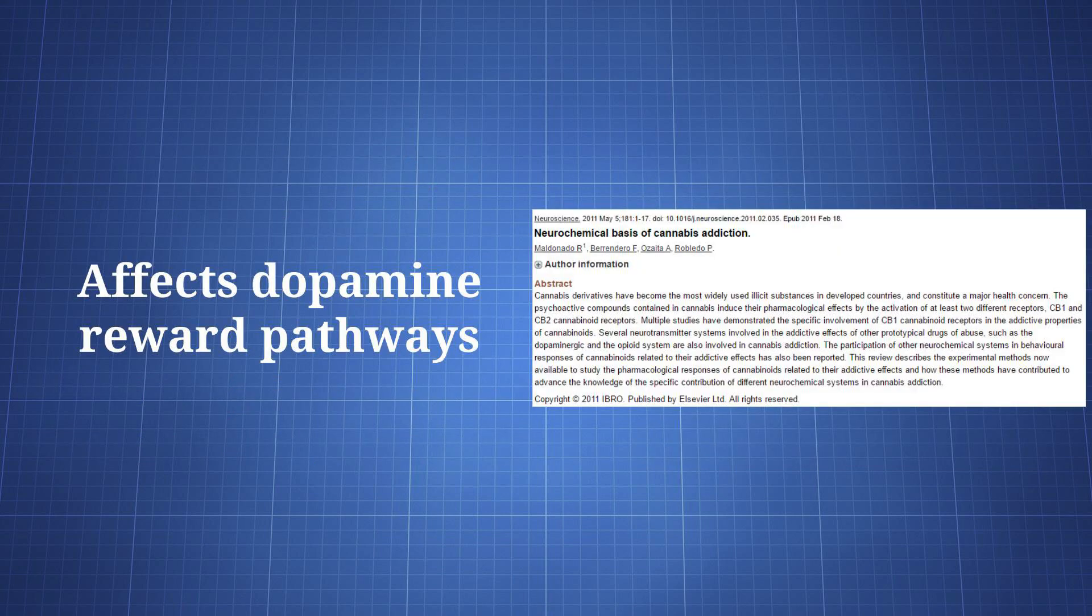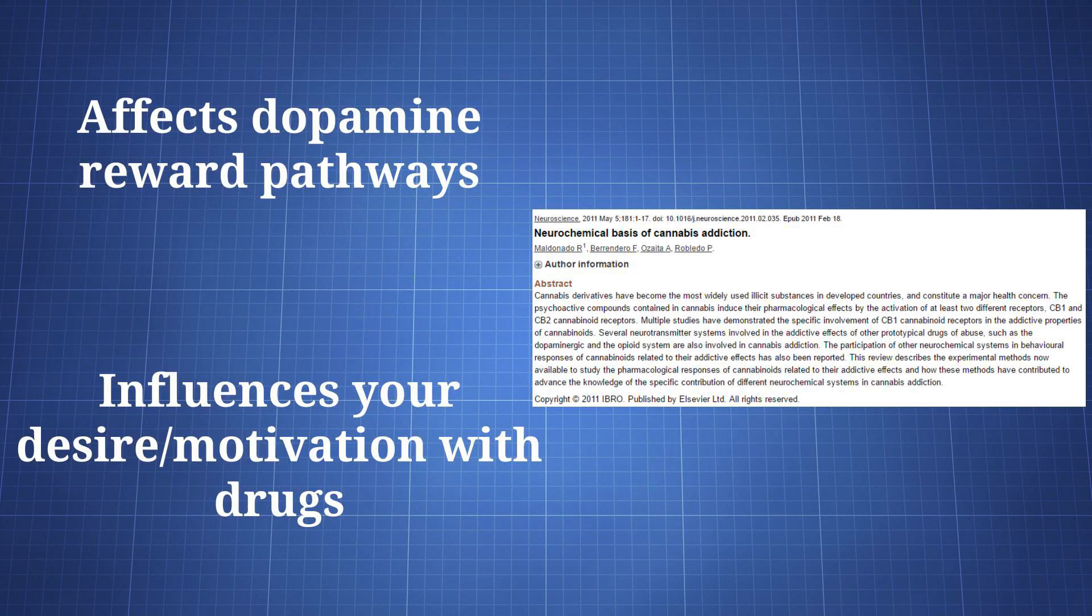Cannabis affects dopamine reward pathways that are commonly associated with other activities people can be addicted to. Activity along these pathways influences your desire to use and also tunes your motivation towards drug use, which can make the withdrawal period more difficult.